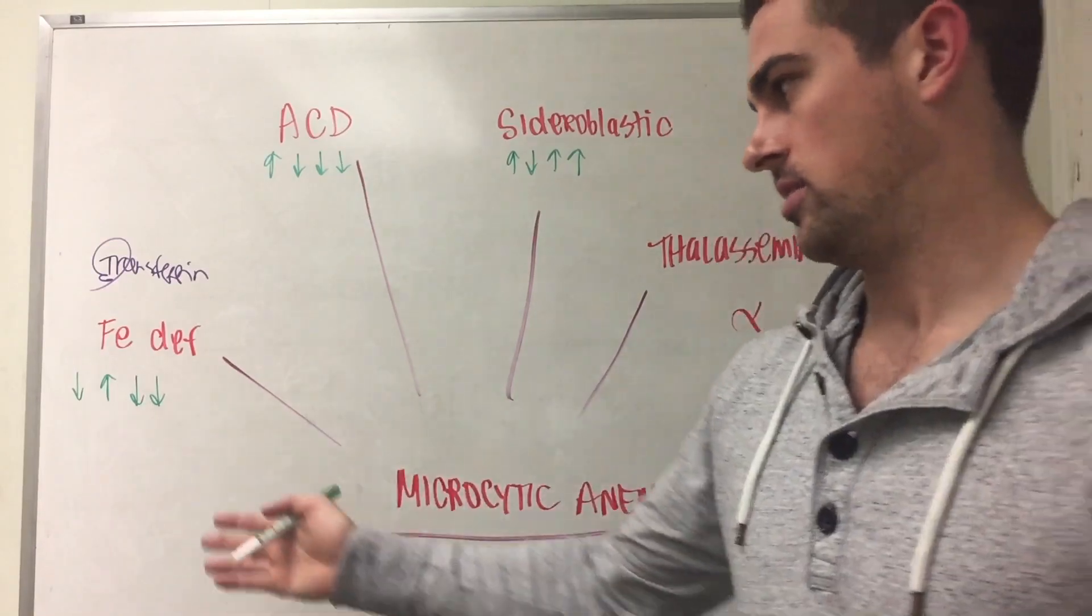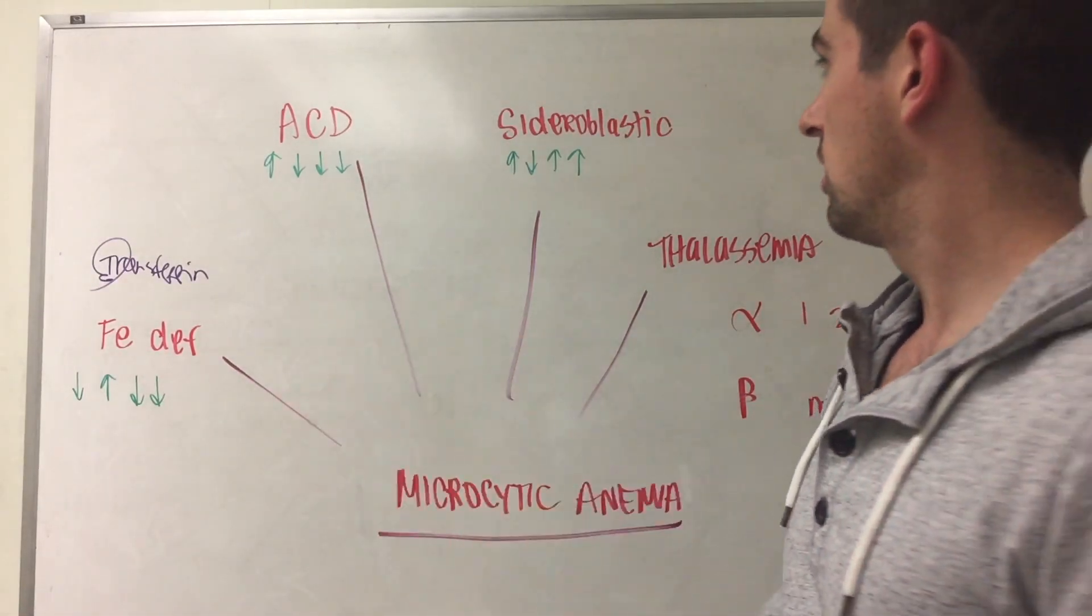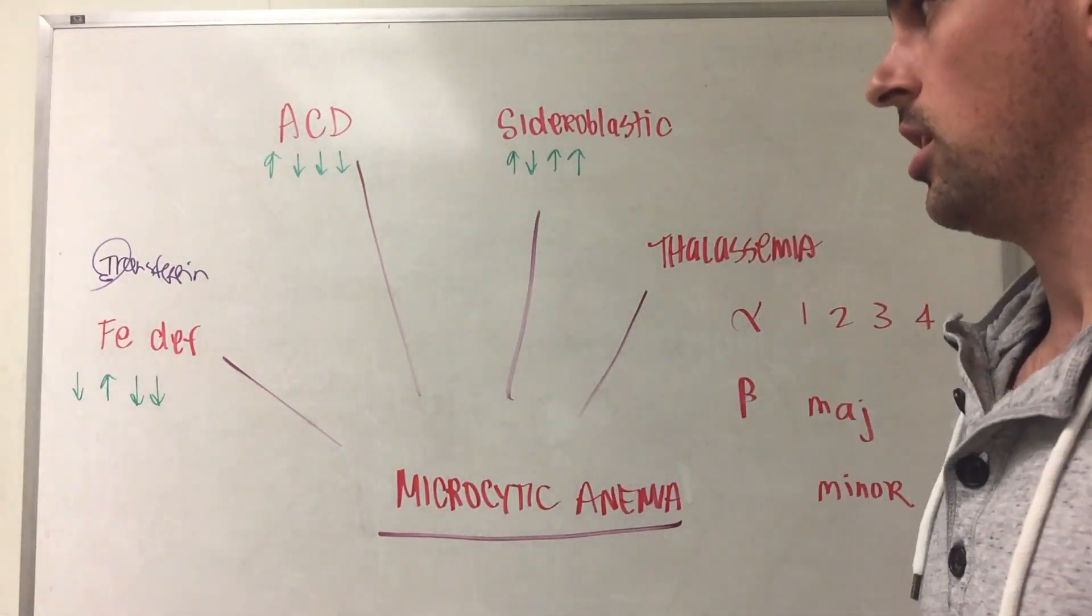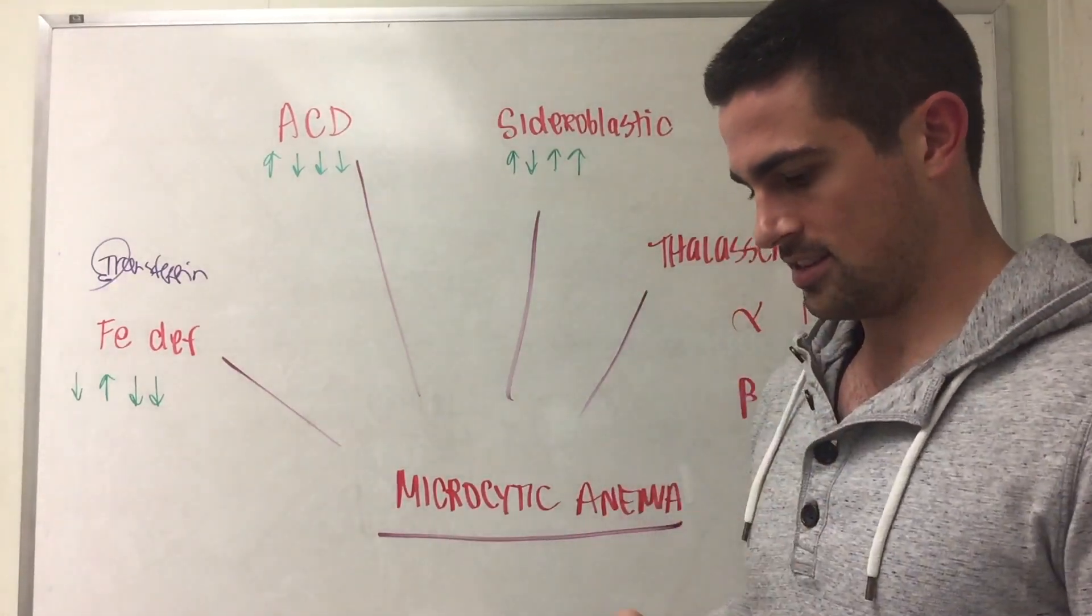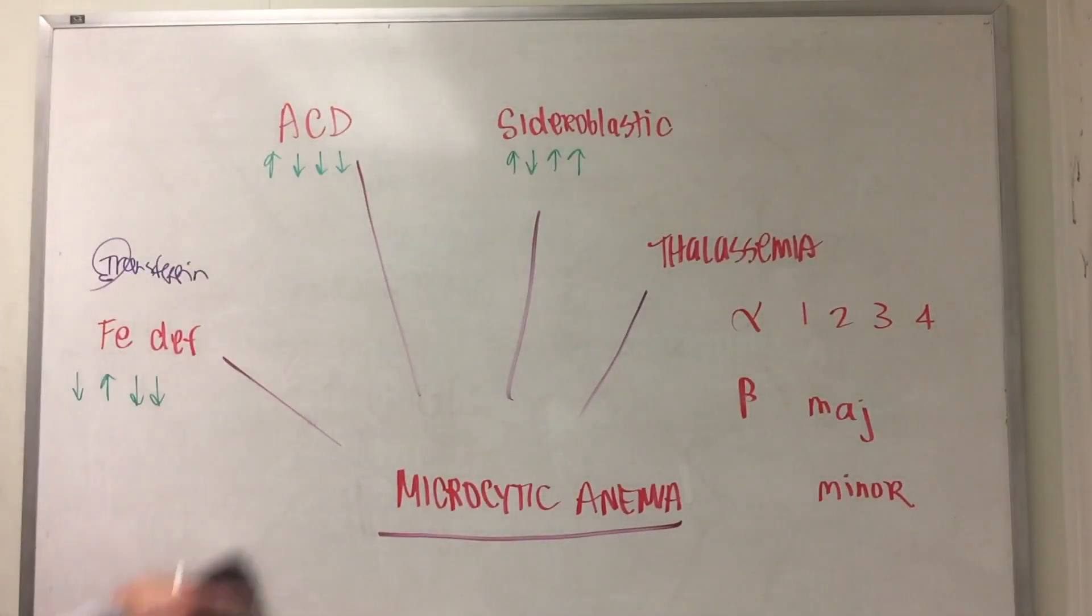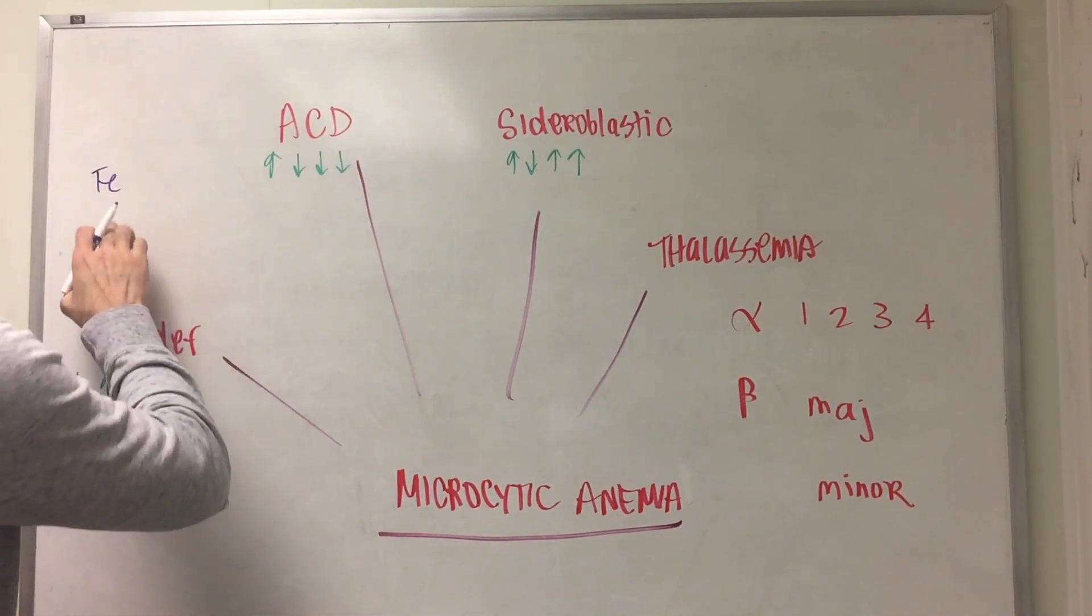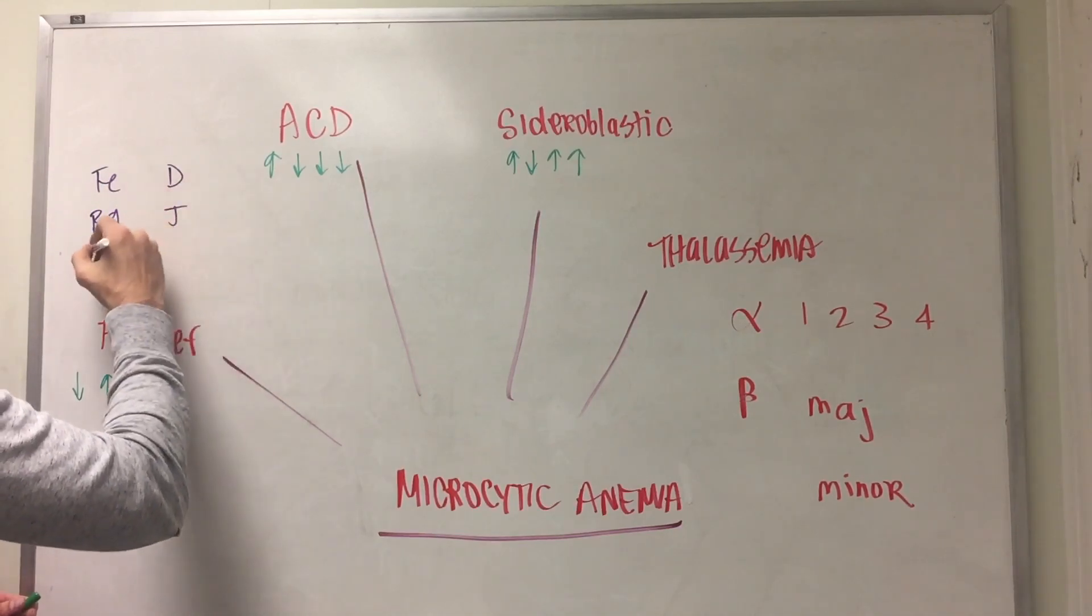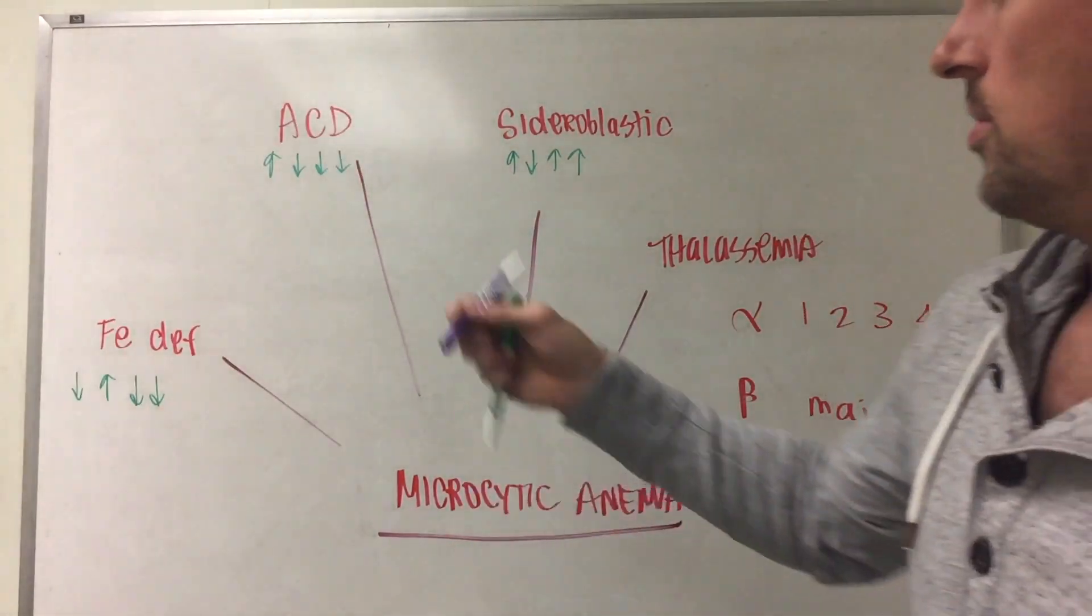The next one is serum iron which is very similar to TIBC, and the last one is percent saturation, very similar. Some other things about iron deficiency that would be important to know: iron is absorbed in the duodenum. A simple mnemonic: iron deficiency is duodenum, B9 is jejunum, and B12 is terminal ileum.